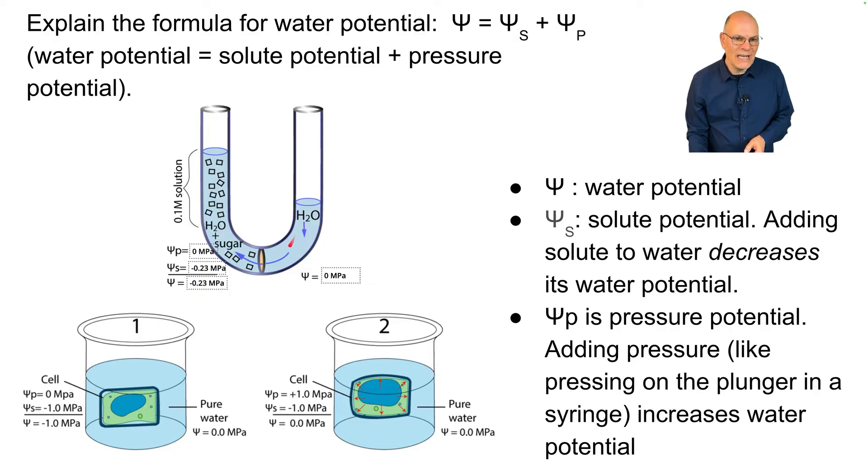The water potential over here is just zero. There's no pressure, there's no solute. So water moves from higher water potential to lower water potential. That's why it's moving from this side of the U-tube to this side.